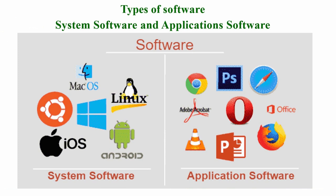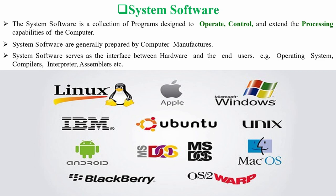There are two major types of software: system software and application software. System software is a collection of programs designed to operate, control, and extend the processing capabilities of the computer. It serves as an interface between the hardware and the end user and is generally prepared by computer manufacturers. Examples include operating systems, compilers, interpreters, and assemblers. The operating system runs the entire computer — without it, the computer cannot work. Examples include Apple macOS, Microsoft Windows, Unix, Android, Linux, and MS-DOS.